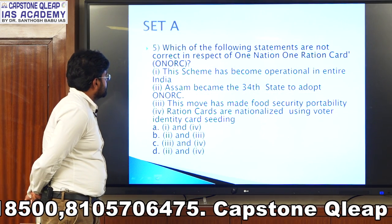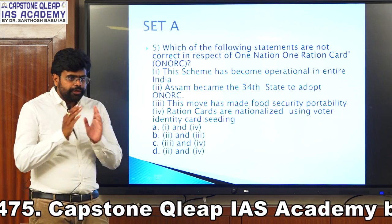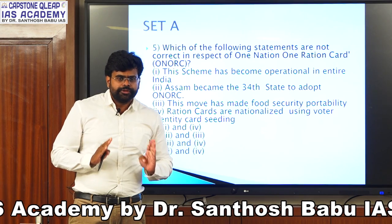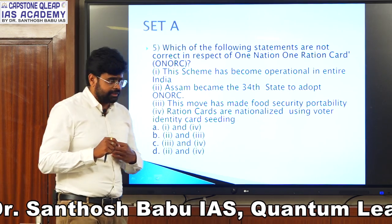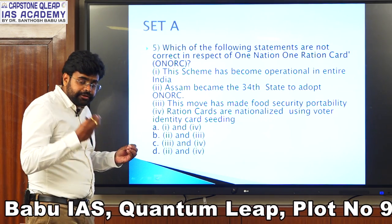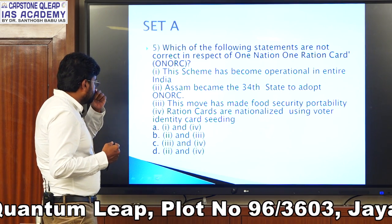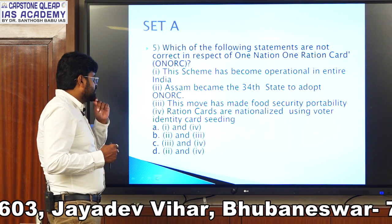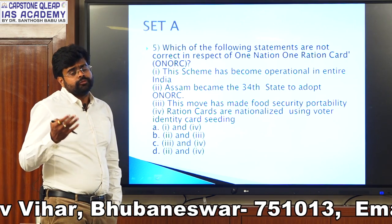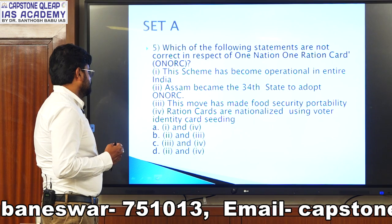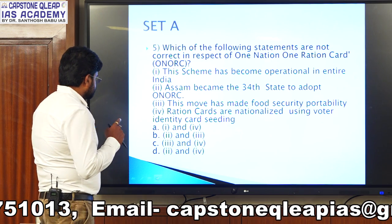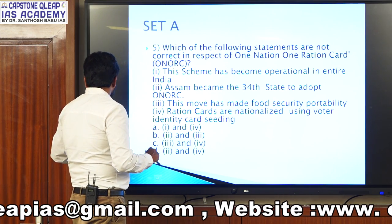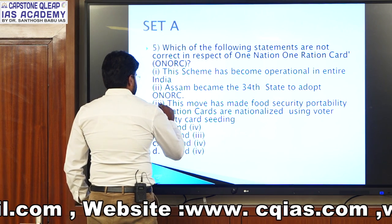Question five: which of the following statements are not correct with respect to One Nation One Ration Card? One nation, one ration card — for the entire India, we have one ration card, for people below the poverty line. Statement one: the scheme has become operational in the entire India. Statement two: Assam became the 34th state to adopt the ONORC. Statement three: this move has made food security portable. Option three is clearly a right option since One Nation One Ration Card enables portability of food security. Statement four: ration cards are nationalized using the voter identity card.